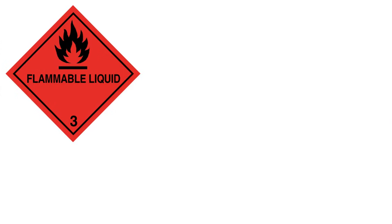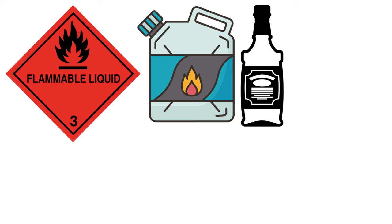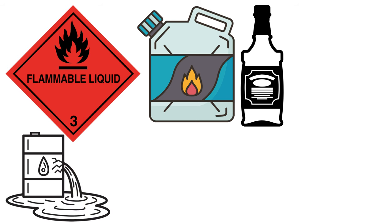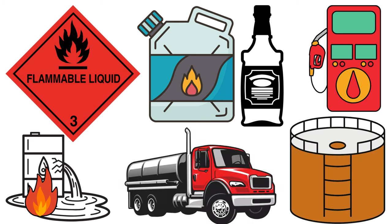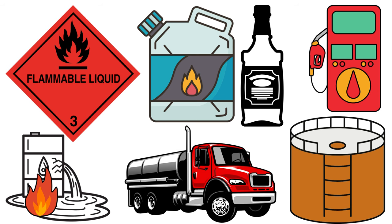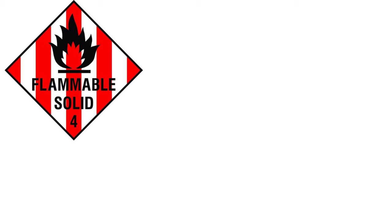Moving on to Class 3: Flammable Liquids. These are liquids that can easily catch fire — gasoline and alcohol are classic examples. Imagine spilling gasoline and accidentally igniting it with a spark; that's why it's classified as dangerous. Flammable liquids are widespread in everyday life, from the fuel in our cars to the alcohol in our cocktails. Proper storage, transportation, and handling are crucial to prevent accidents and fires.